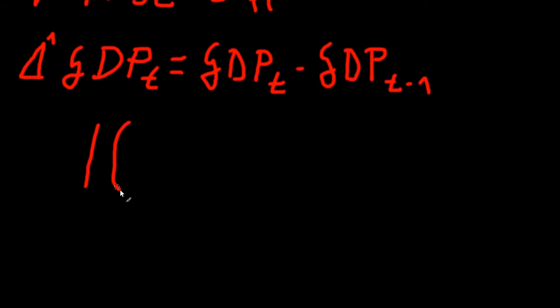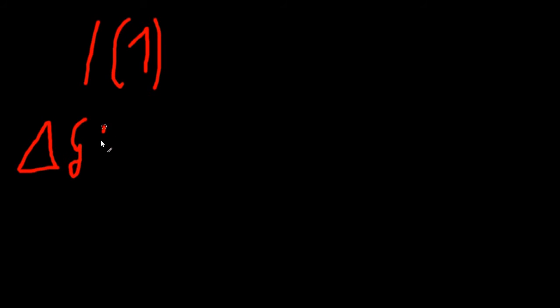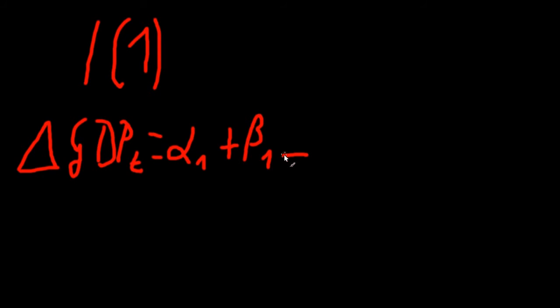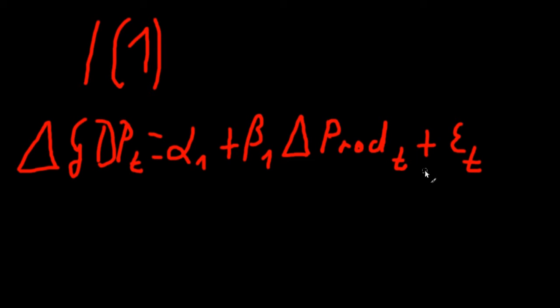We conclude that both GDP and productivity are integrated of order one, notated as I(1). Our regression equation explains the change — the first difference — of GDP at time t by a constant alpha one, plus beta one times the first difference of productivity, which we call 'prod' at time t, plus an error term. This model postulates a contemporaneous relationship between productivity and GDP.